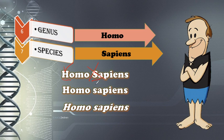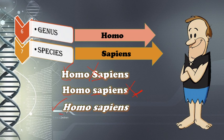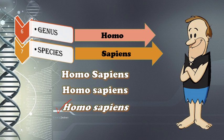The last one is correct: the first letter of the genus is capital, the first letter of the species is lowercase, and it is italicized — not straight letters. That is the right way to write a scientific name. And if you are writing it by hand, you need to underline the scientific name instead of italicizing it.